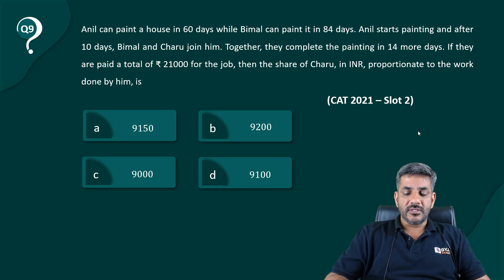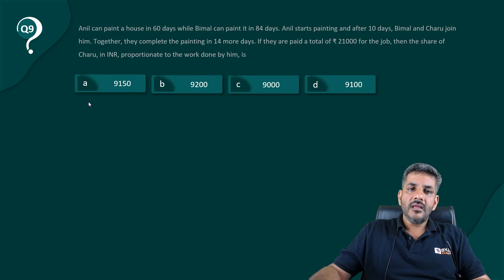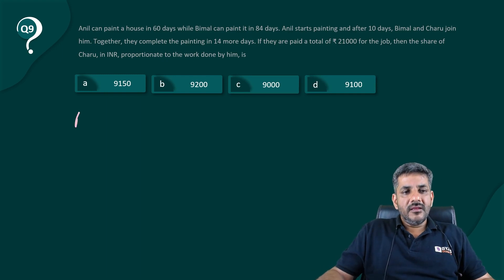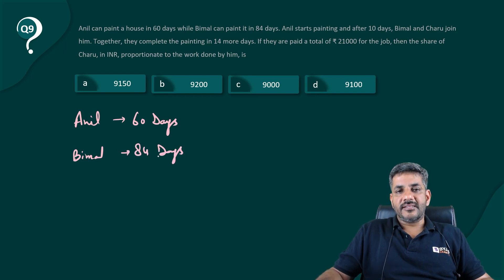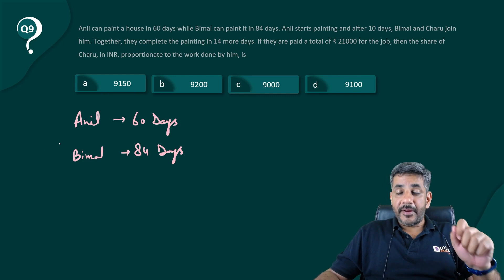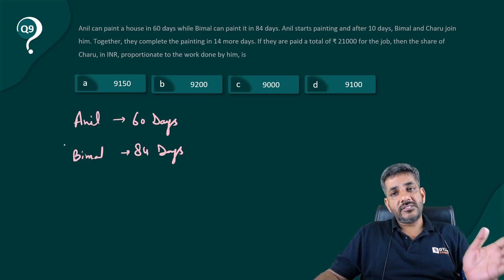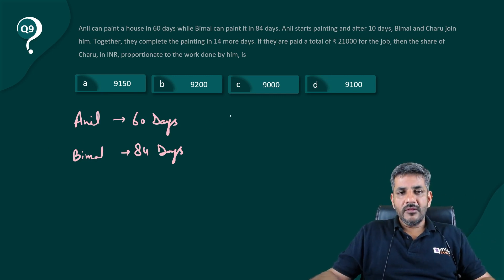If they are paid a total of 21,000 rupees for the job, then the share of Charu proportionate to the work done by him. Now what is given to us: Anil can do the job in a total of 60 days, and Bimal can do the job in a total of 84 days.